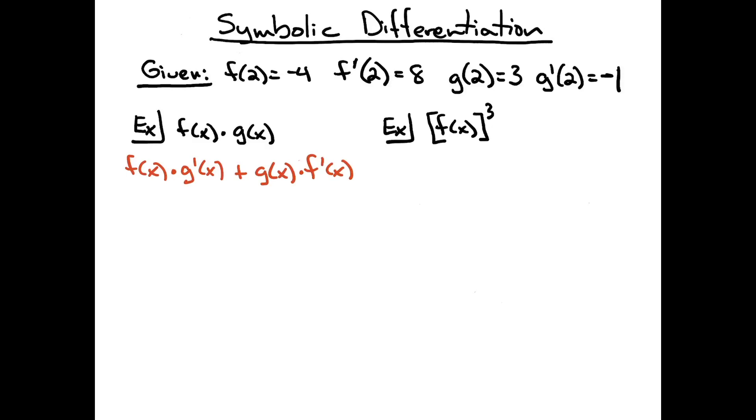Now they want me to calculate the derivative at x equals 2. So now I'm going to show f of 2 times g prime of 2, plus g of 2 times f prime of 2. And all of those values have been given to us. So now it's a matter of arithmetic, some calculation here.